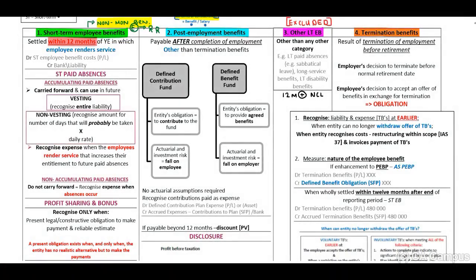To recognize a short-term employee benefit, you will debit your short-term employee benefit cost in profit or loss and credit either bank or a liability. Remember, you need to identify whether the liability will be settled within 12 months.